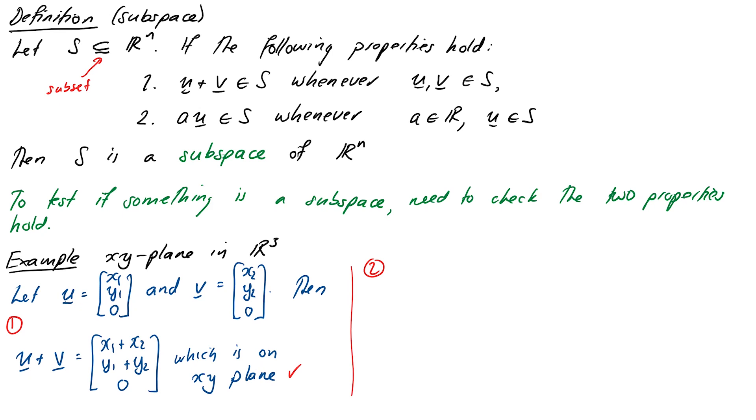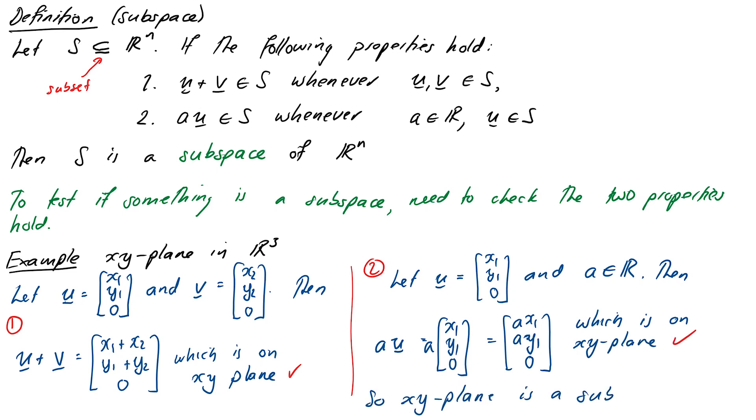To test the other one, we're going to choose a scalar, let it be A. Then A times U will be A times the vector (x1, x2, 0), which I can bring that A inside by scalar multiplication, will be (Ax1, Ax2, 0). This is likewise still a vector on the plane, so now we can say that the plane is definitely a subspace because the two properties have been satisfied.